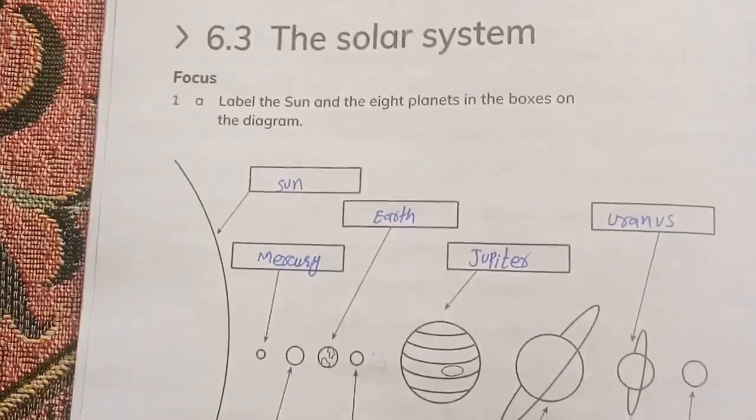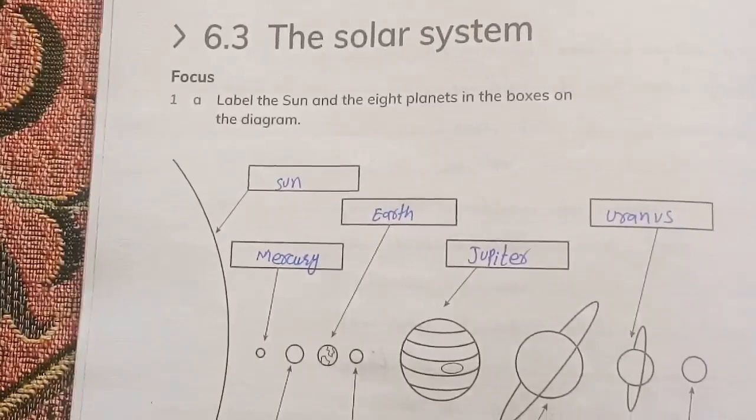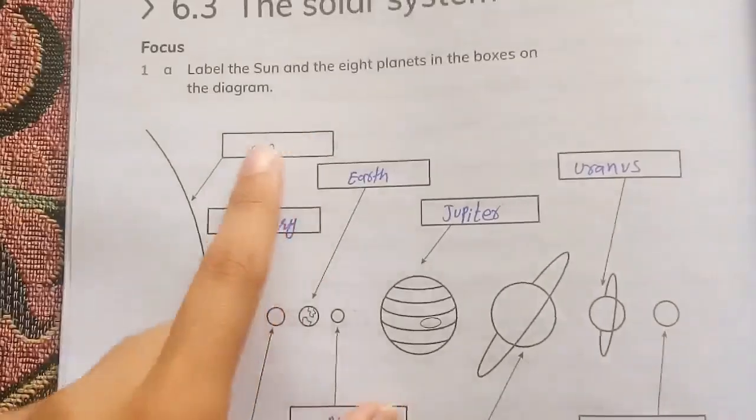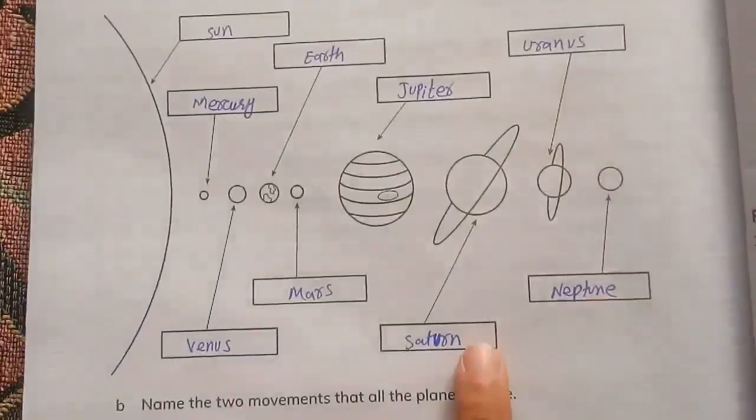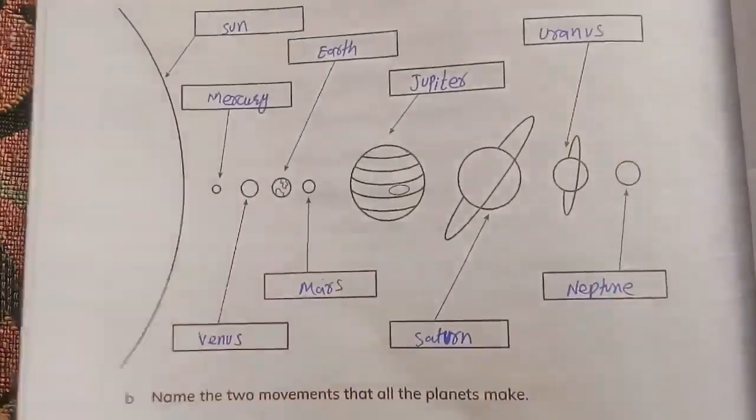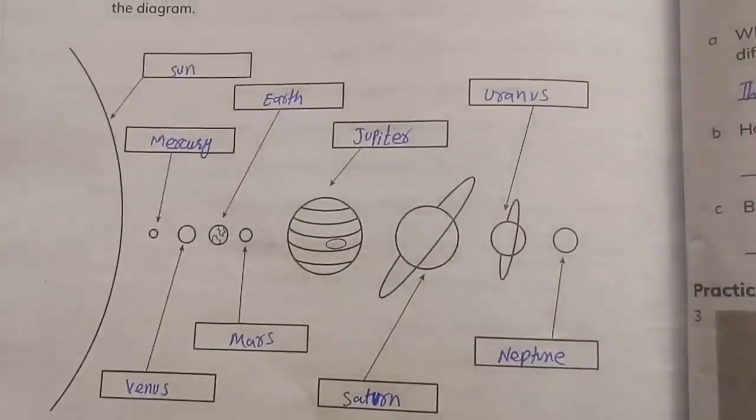Label the sun and the eight planets in the boxes on the diagram. So this is the Sun, Mercury, Earth, Jupiter, Uranus, Neptune, Saturn, Mars, and Venus. You can note it down now.